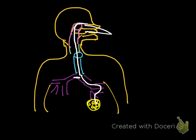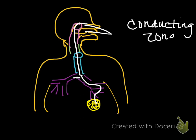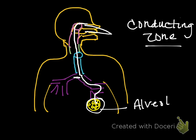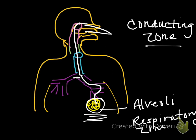Air then reaches the alveoli. Everything up until the alveoli has been the conducting zone. Once we get into the alveoli, we're now in the respiratory zone, and this is where external respiration happens - oxygen from the environment gets into our body and we put the carbon dioxide we produced back into the environment. That wraps up today's lecture. I'll be doing the first section of notes shortly - bye everybody!